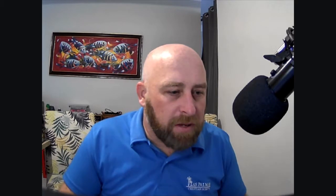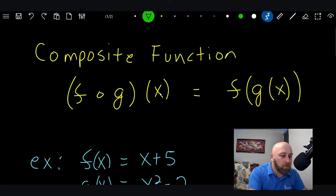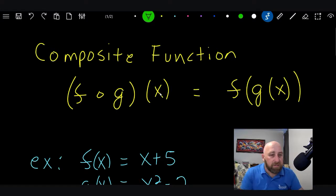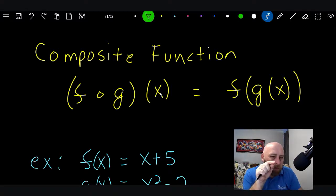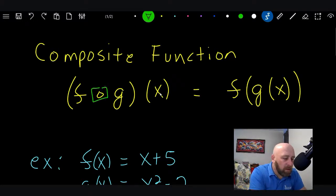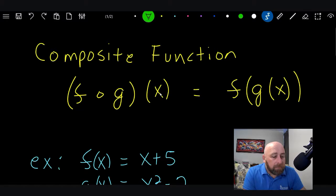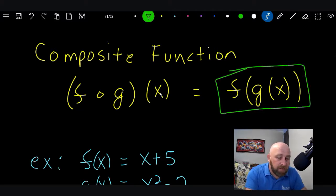Composite functions can be used in many applications, not just shopping. Looking at the screen, composite functions are written as f∘g — it looks like 'FOG.' That little open circle is not an 'O' — it's almost like a multiplication sign but open. This notation means 'composite of f and g,' so f∘g means the function f composed with the function g.